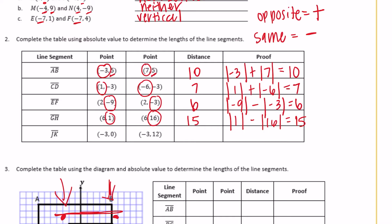For negative 3, 0 and negative 3, 12 — we have 0 and 12. Since one coordinate is 0, it doesn't matter whether you add or subtract. The absolute value of 0 plus the absolute value of 12 is 12. So the distance is 12.